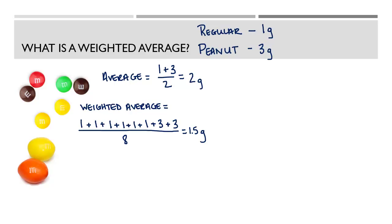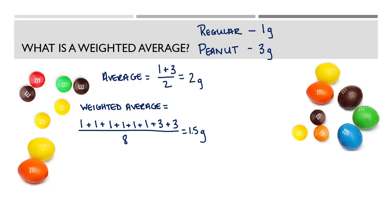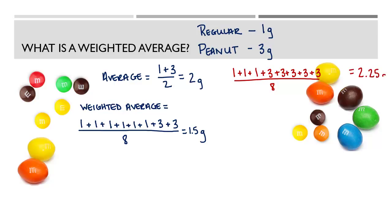Let's take a look at a different sample that has more peanut M&Ms. We have 3 regular M&Ms with a mass of 1 gram each — so 1 plus 1 plus 1 — and 5 peanut M&Ms with a mass of 3 grams each — so 3 plus 3 plus 3 plus 3 plus 3. We have 8 total M&Ms, so we divide by 8 and get 2.25. That's a higher average than the first set because there are more of the heavier M&Ms.